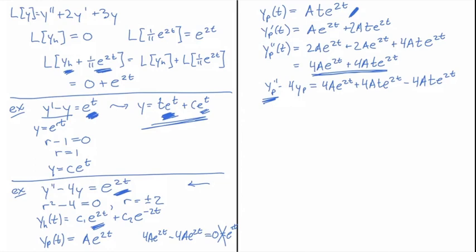And you'll notice this is a key feature of why this method works. If I look at all the terms that have a t e to the 2t, that's this one here and this one here. This one came from two derivatives of yp.